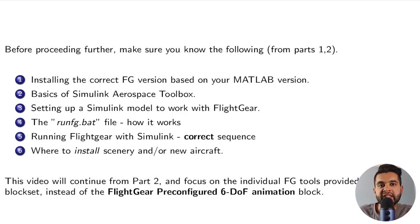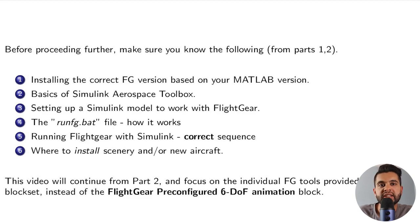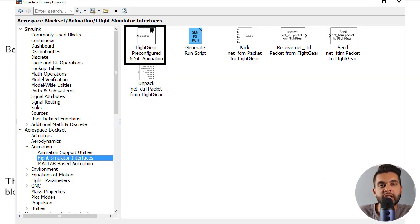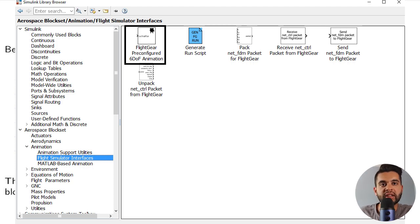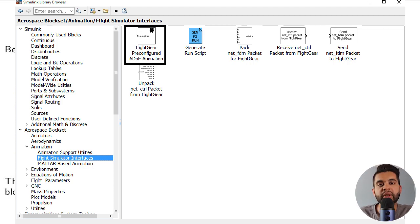Now we'll be using individual FlightGear tools. These are provided within the Simulink Aerospace Blockset. We will not be using the pre-configured 6DOF animation block, because that's what was used before. These tools allow you to put a lot more detail into your simulation.